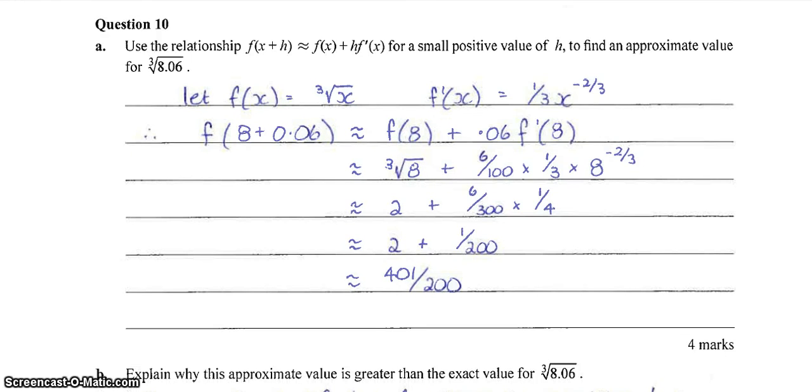Okay, question 10. We've got a linear approximation question. So we're given the formula here, which should make it a little bit easier. So using the relationship f of x plus h is approximately equal to this for a small value of h, find the approximate value for the cube root of 8.06. So the first thing you should do is we're going to decide what the function is actually going to be. So it's obviously just going to be the cube root of x where we're going to use 8 as x and h is going to be 0.06.